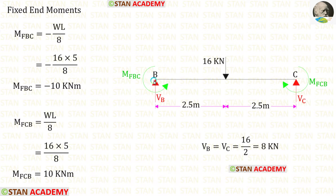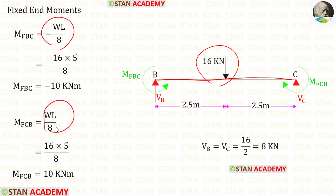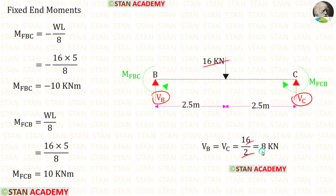Now let us find the fixed end moments and reactions in beam BC. In beam BC, we have a point load of 16 kN acting at the center. The formulas to find the fixed end moments are minus WL over 8 and positive WL over 8. Using the formula, we get M_BC and M_CB. For the vertical reactions V_B and V_C, we divide the point load by 2, giving us 8 kN.